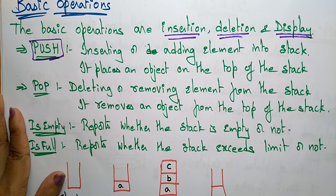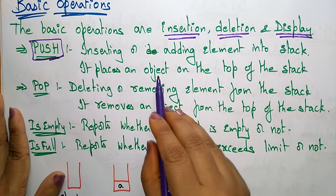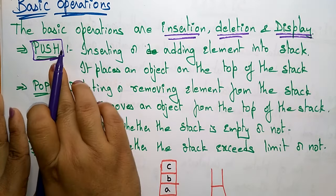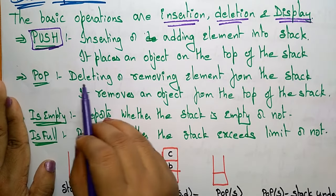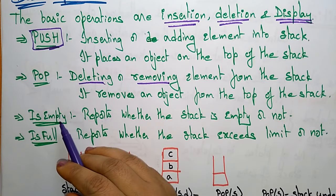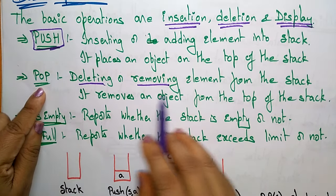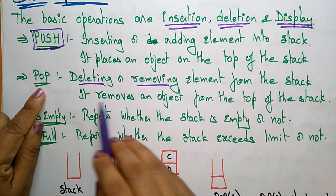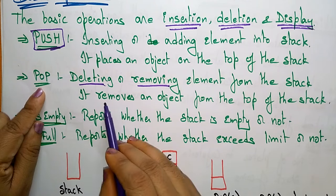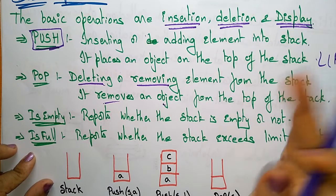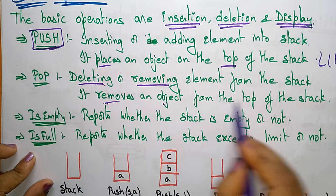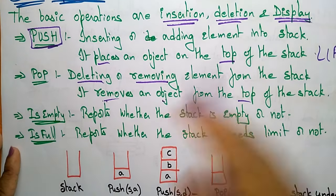For insertion, we use the term push. Push means inserting or adding elements into the stack — it places an object on the top of the stack. For deletion, we use the term pop. Pop means deleting or removing elements from the stack — it removes an object from the top of the stack. This is why we call it LIFO: place on top, remove from top.